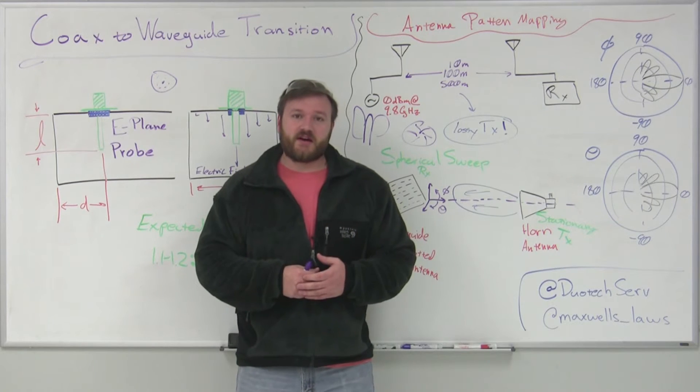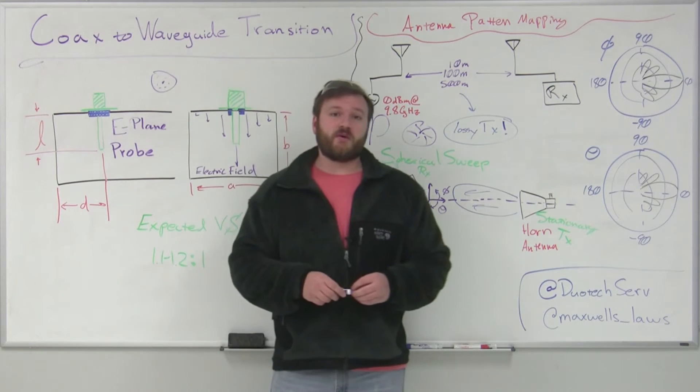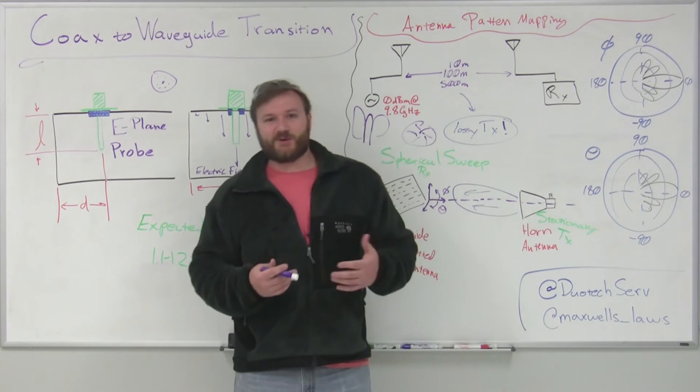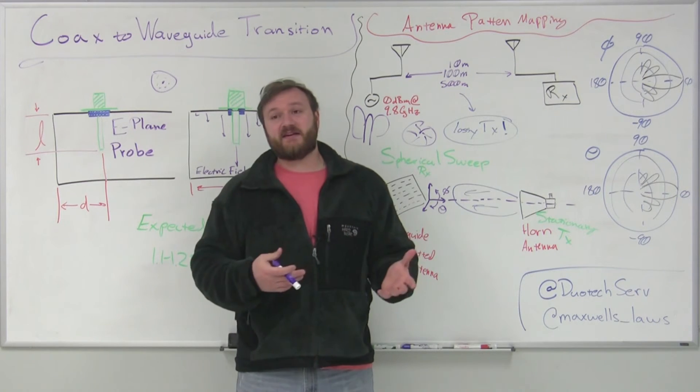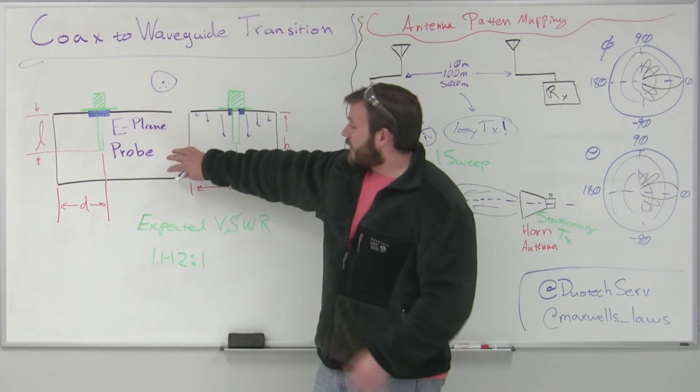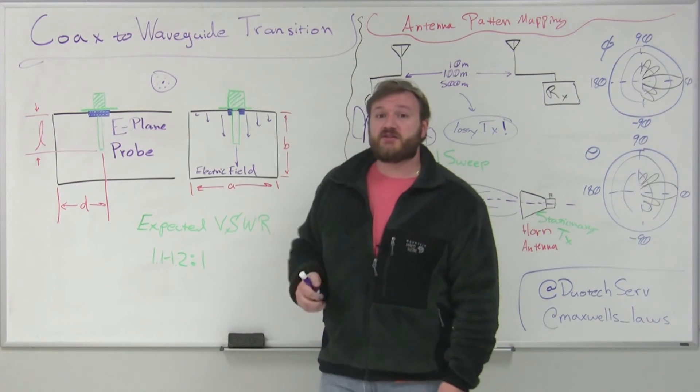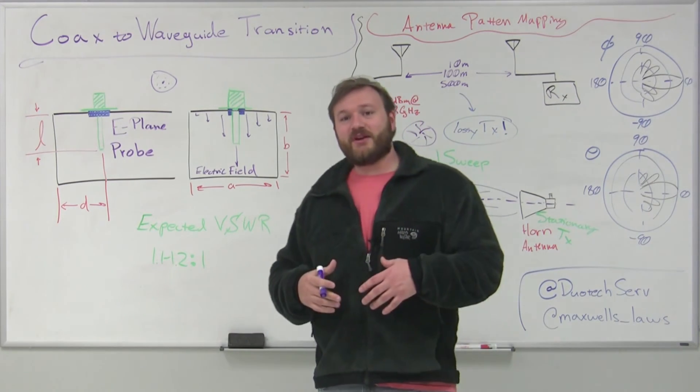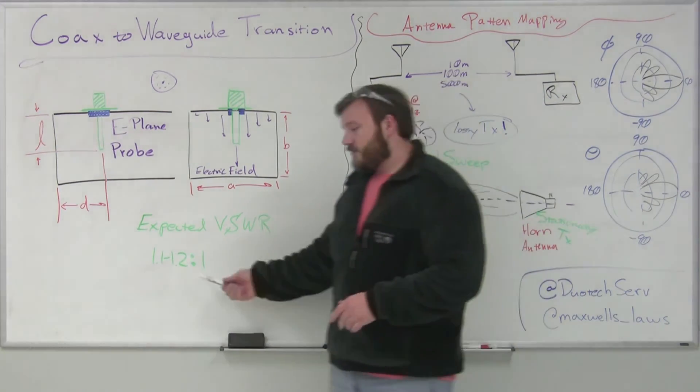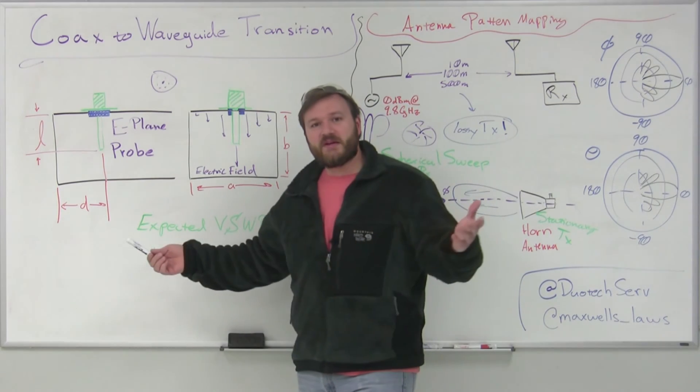And we'll show some more videos and as well as some blog articles showing practically what does it look like for mapping the pattern of an antenna, as well as looking at building two of these coax to waveguide transitions, putting them on a vector network analyzer and verifying is the standing wave ratio we get the one we expect?